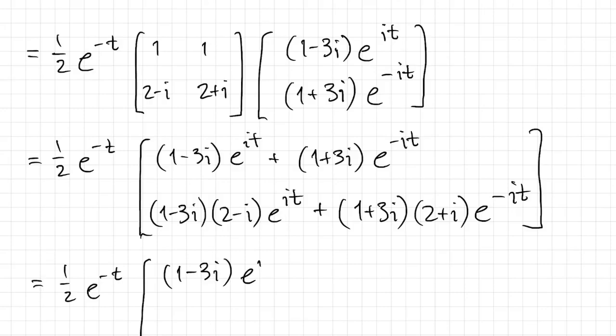The first row is just this number plus its complex conjugate. In the second row, I multiply together the 1 minus 3i and 2 minus i. And then times e to the it plus the conjugate of that whole thing, too.